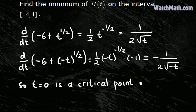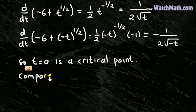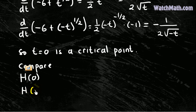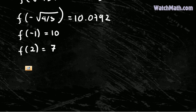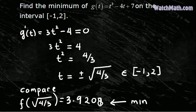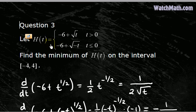Now what we need to do is compare the value of h at the critical point and at the endpoints of the interval. So we compare h of 0, because 0 is the critical point, and h of negative 4 and h of 4, because those are the endpoints of the interval. So h of 0 — by definition, when t equals 0 we use that piece — so h of 0 is negative 6.